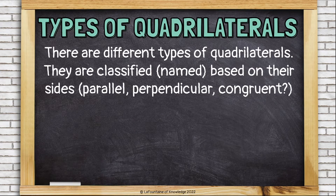There are different types of quadrilaterals. They're classified or named based on their sides. Are they parallel? Are they perpendicular? Are they congruent?